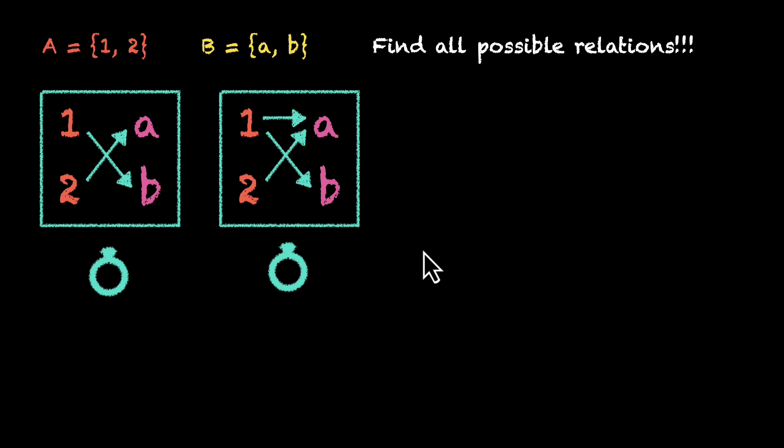But what if we have less number of connections? Let's say 1 is connected to A and that's it. 2 is not connected to anything. Is this a relation? Well, yes, this is also a relation.